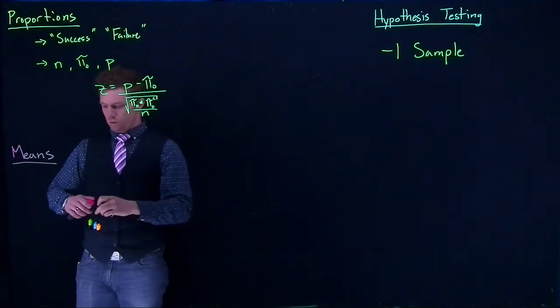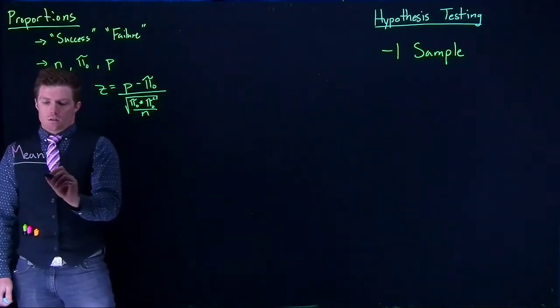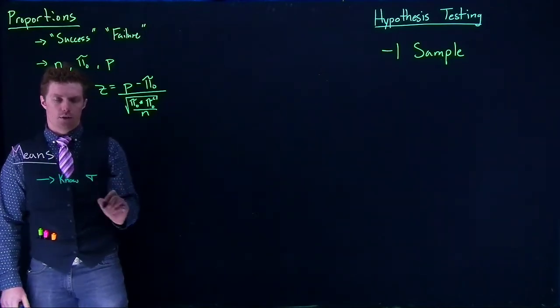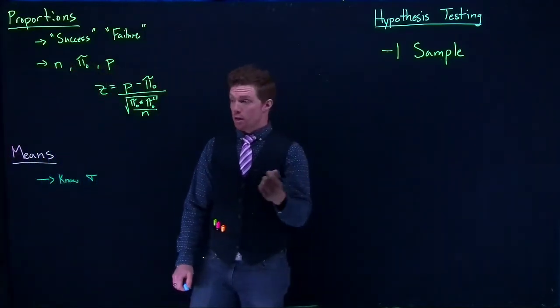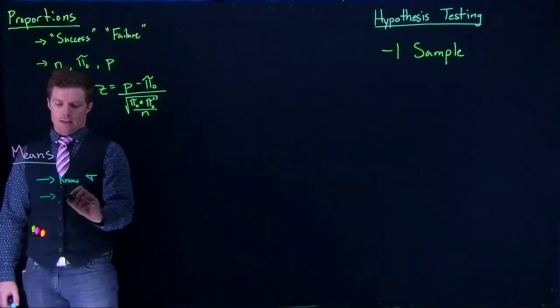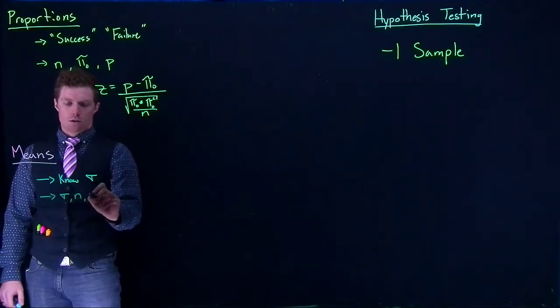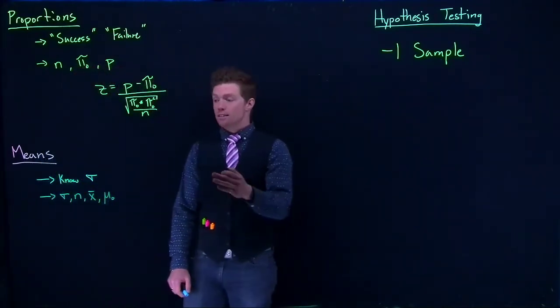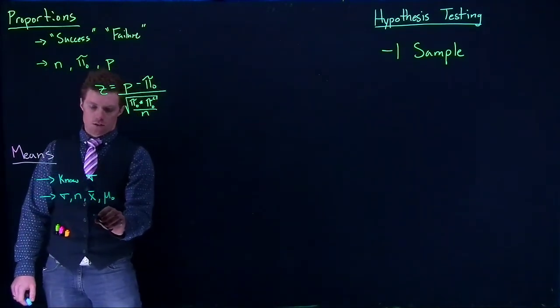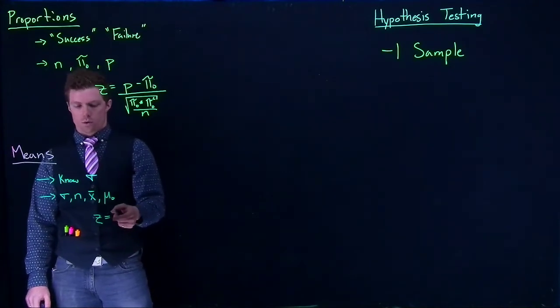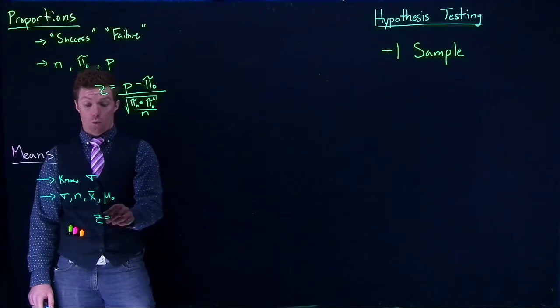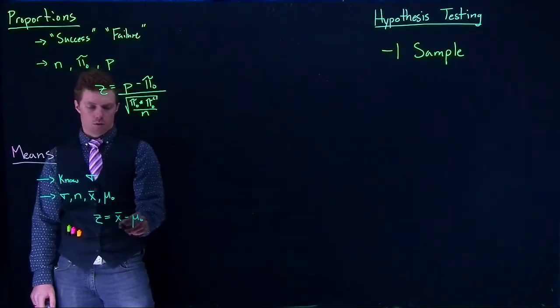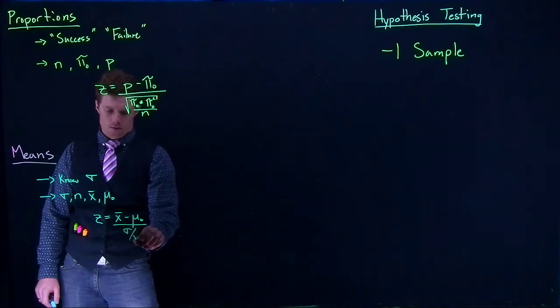And when we deal with means, we've got a couple of options here too. So we could do, if we know sigma, if we know the population standard deviation. And if we know this, then the variables that we're going to have, we're going to know what sigma is, we're going to know what n is, we're going to have an x bar, and we're going to have a mu naught, or our hypothesized mu. And to figure out our test statistic here, we are going to use this z equals, so it will be x bar minus the hypothesized mean mu naught divided by sigma divided by the square root of n.